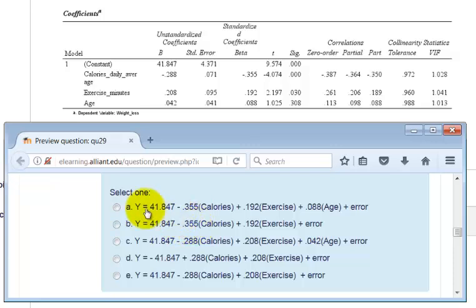This one, again, uses beta weights. This one, nope, it has age in it. Remember, age is not a significant predictor, so don't use it.